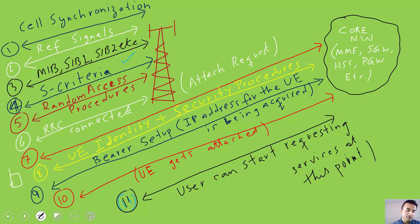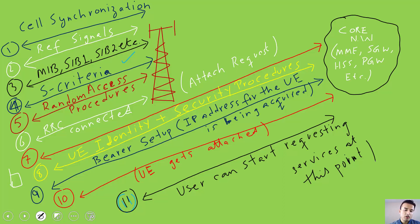These are the high-level steps broken down into roughly 10-11 steps to give a high-level understanding. If you go into each step you will see how many messages are exchanged — for example, random access requires four messages, and similar detail applies to security procedures and cell synchronization. This video should help those who want to understand what happens after S criterion. If you have any other questions, please leave a comment and I'll be happy to give further explanations on the attach procedure.